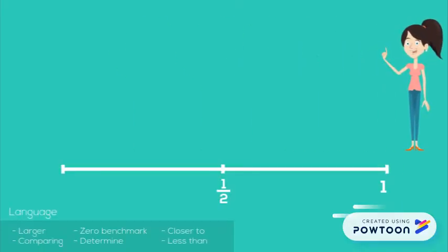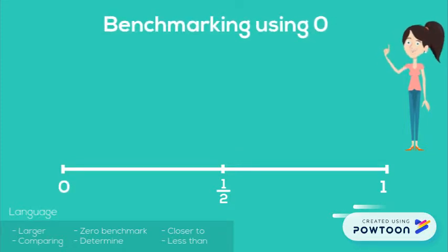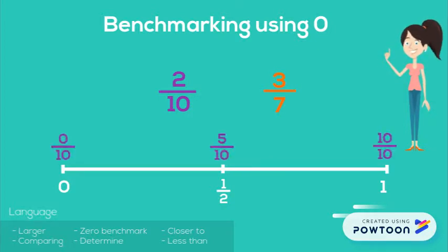Similarly, if we have two fractions that are below a half, we can use zero as a benchmark to determine which one is larger. When comparing 2/10 and 3/7, we can see that 2/10 is closer to zero and 3/7 is closer to a half, and therefore 2/10 is less than 3/7.